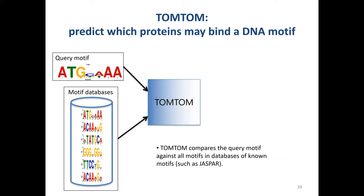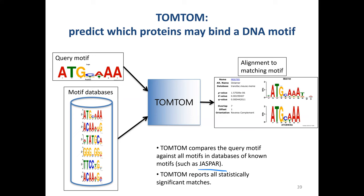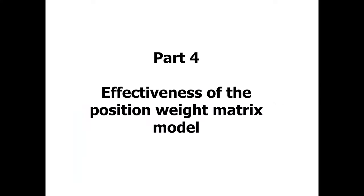Once you've generated a motif, what do you do with it? If you've de novo discovered a new motif, you can use TomTom, which is part of the MEME suite — it has a website and software you can run yourself. You can search your query motif against all of JASPER and it will give you various stats. For example, your query motif might match motif 795 in JASPER with a decent e-value. Alternatively, instead of de novo discovery, you can scan the whole genome with existing motifs like those from JASPER.